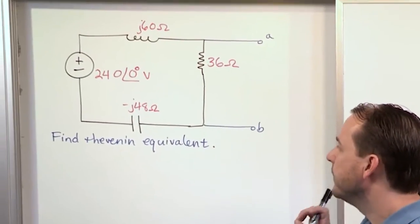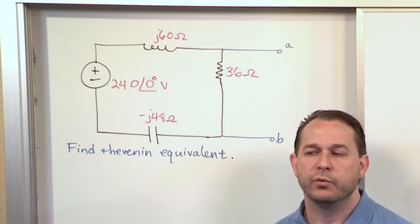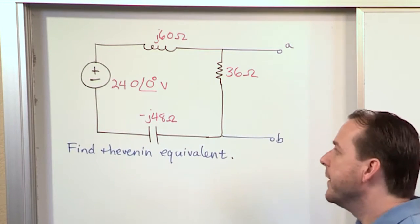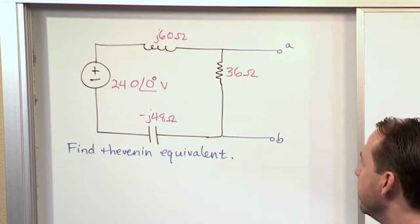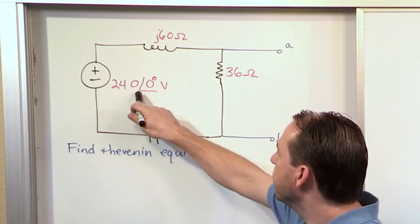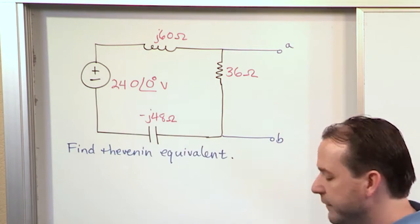So this is a very simple Thevenin equivalent problem. We'll get to more complicated problems later. But to illustrate it, we'll have this guy here. We have an AC source, 240 volts, at a phase of zero degrees.